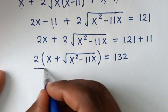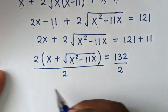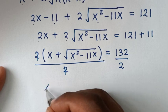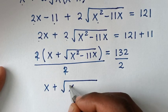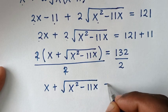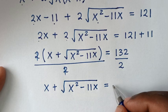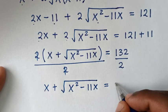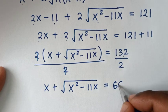In the next step, we divide both sides by 2. The 2s cancel, leaving x plus the square root of x² minus 11x is equal to 132 divided by 2, which is 66.